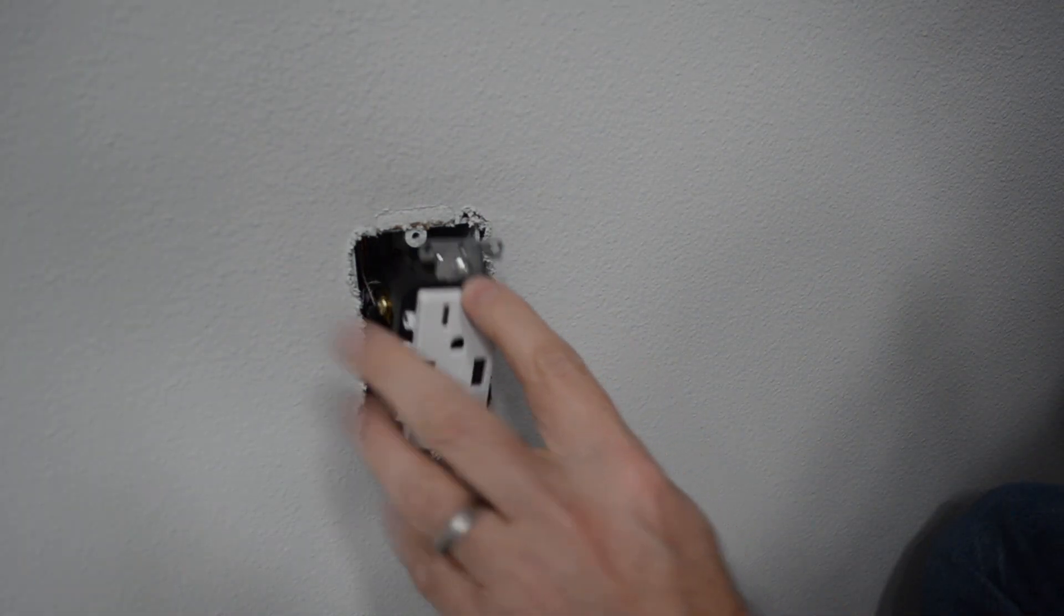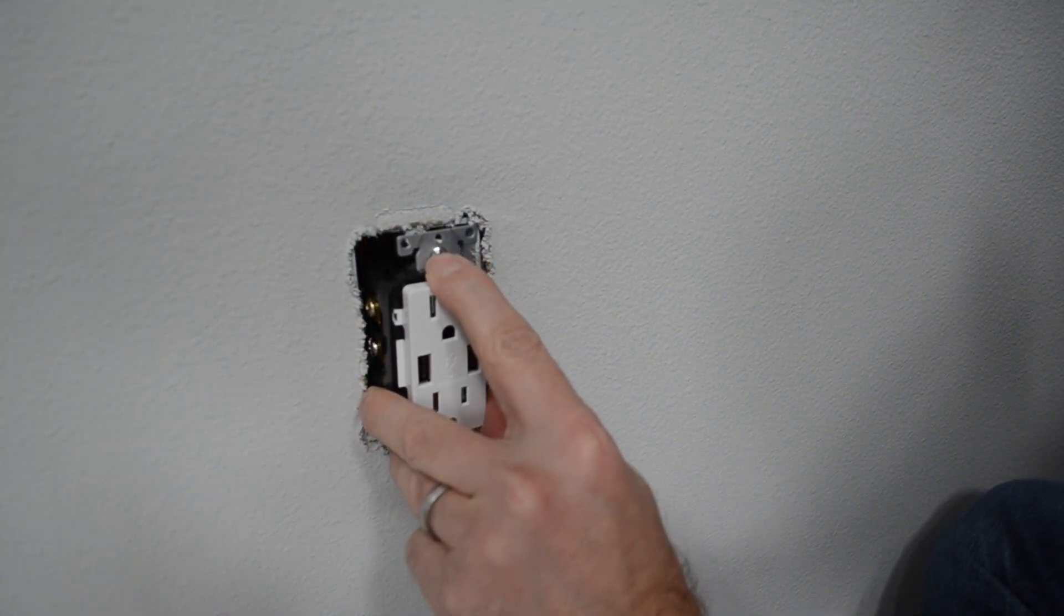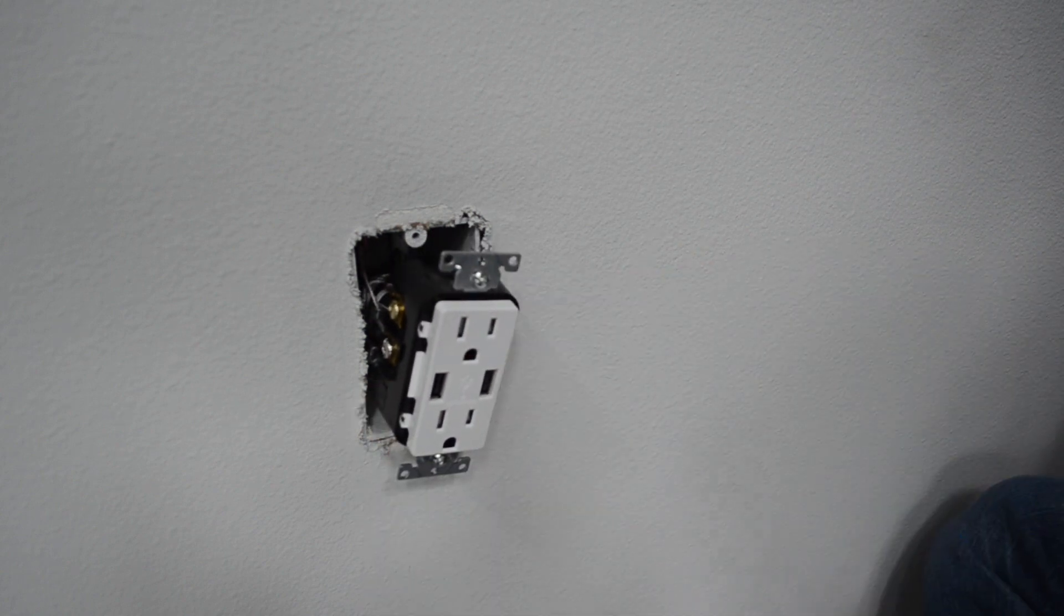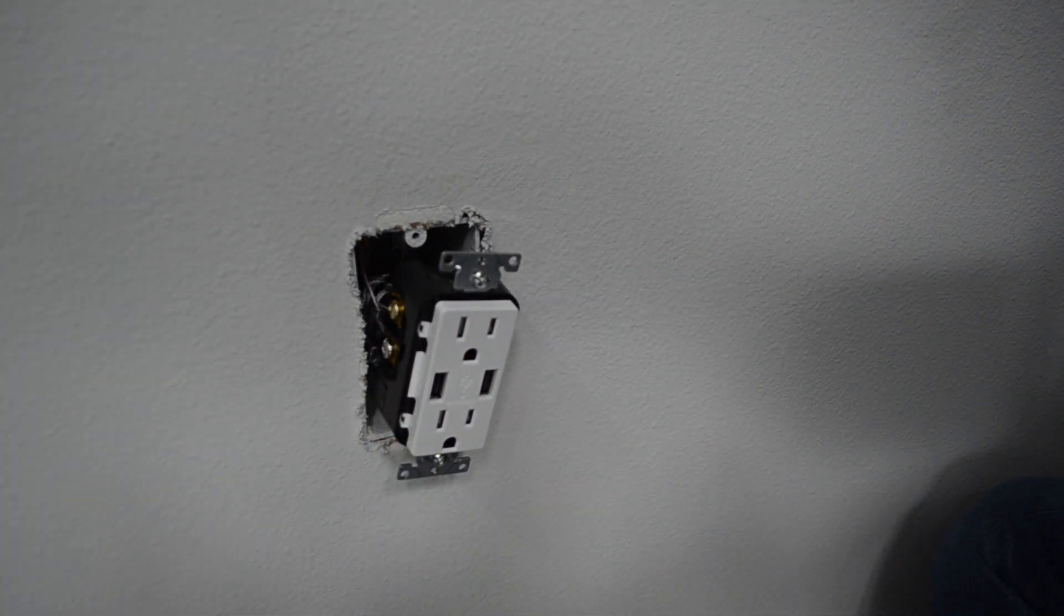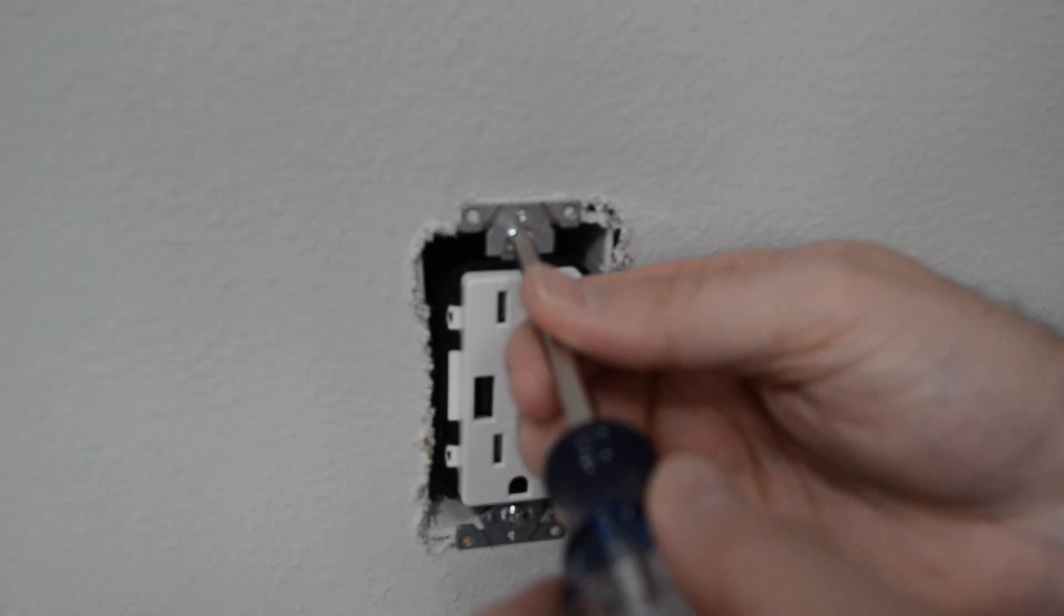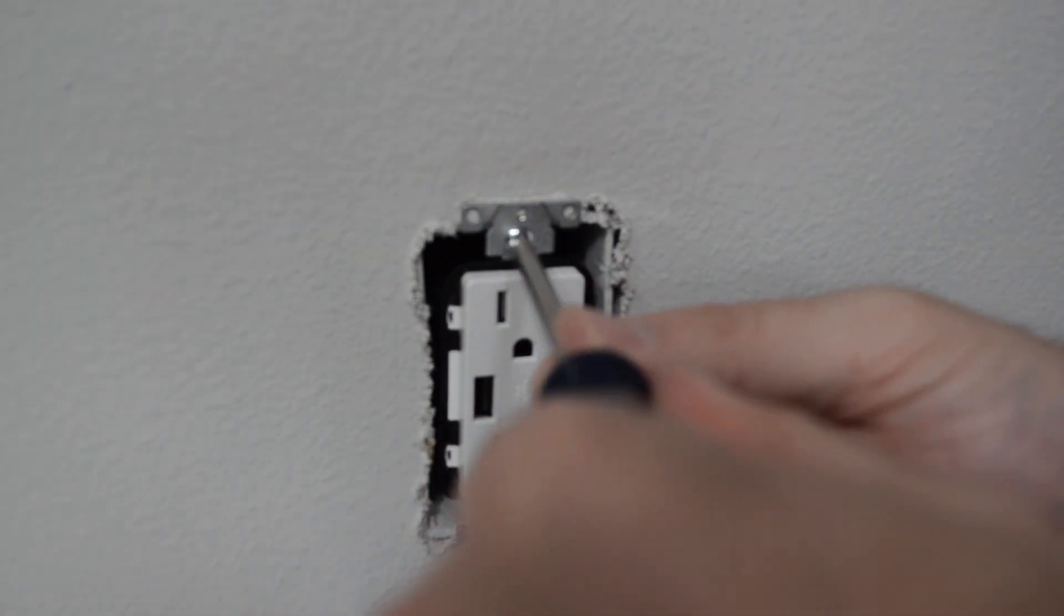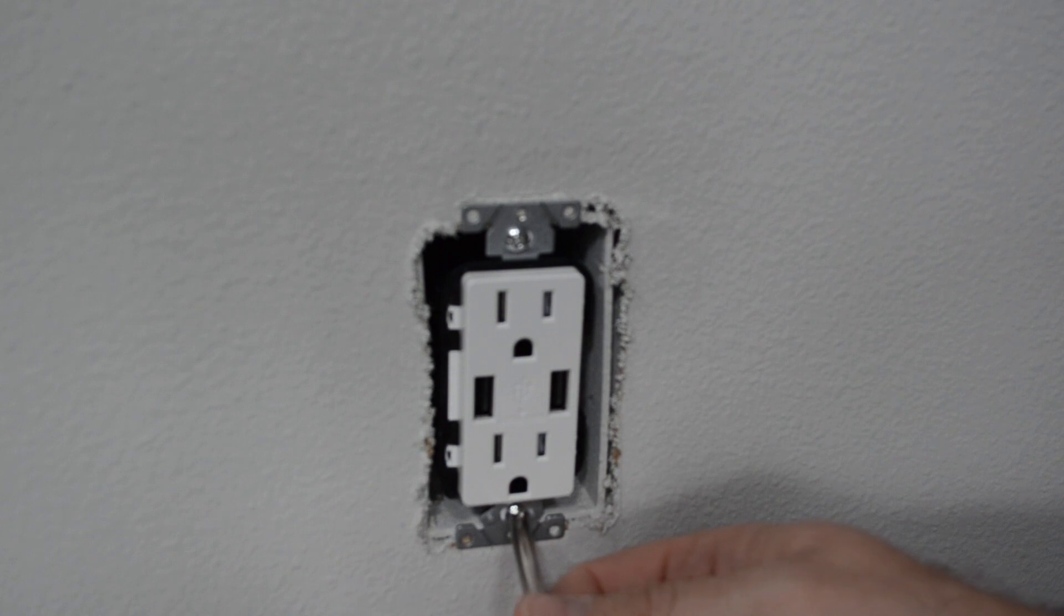Next, we will screw these screws back in to hold the new outlet to the box and put the cover plate on. As I finish up tightening up these screws, we are ready to put on our cover plate.